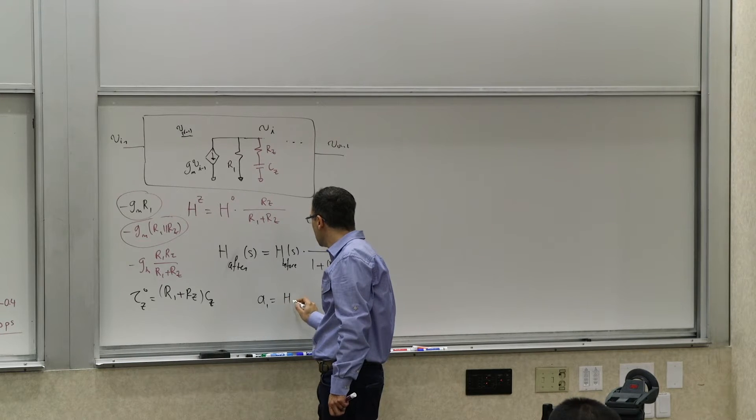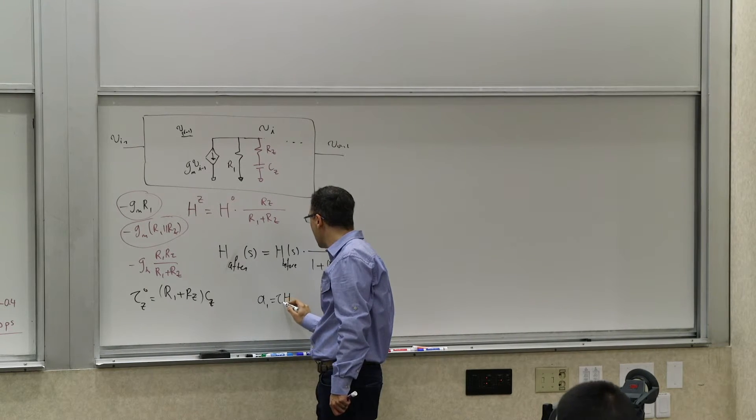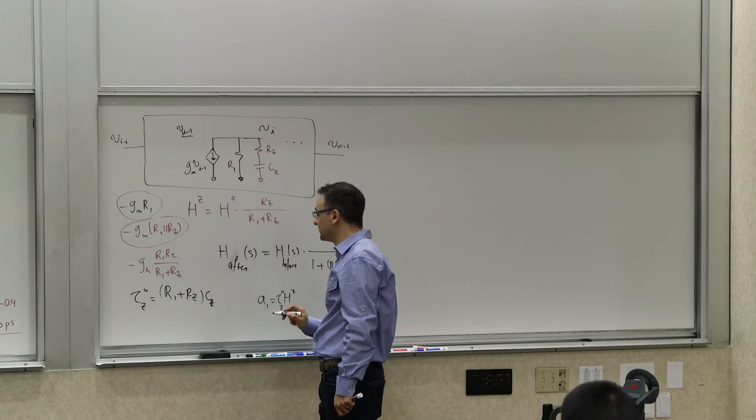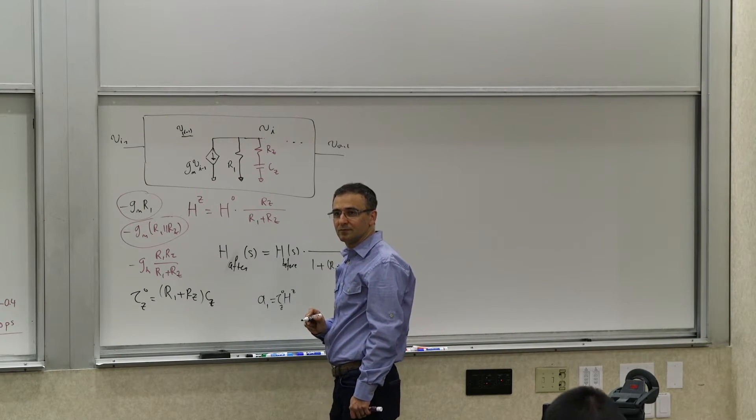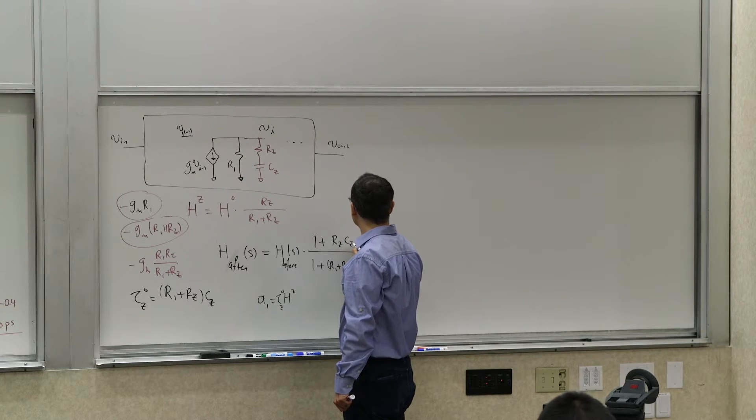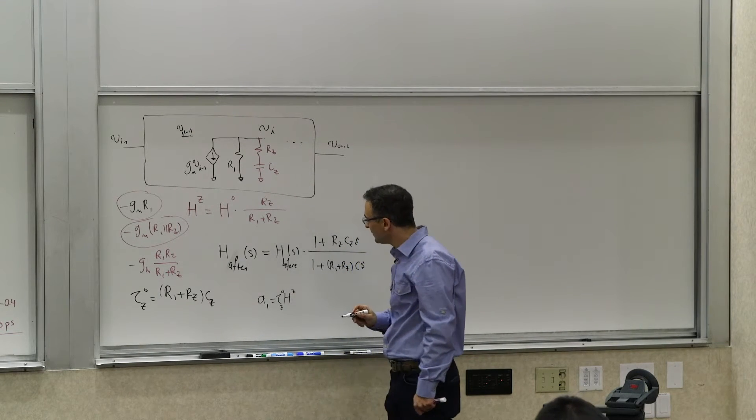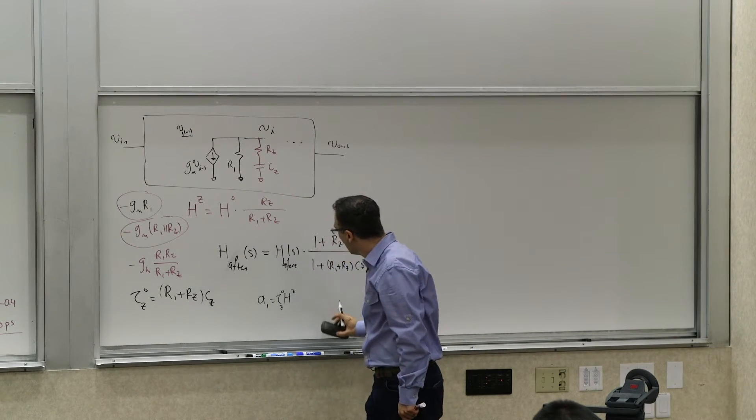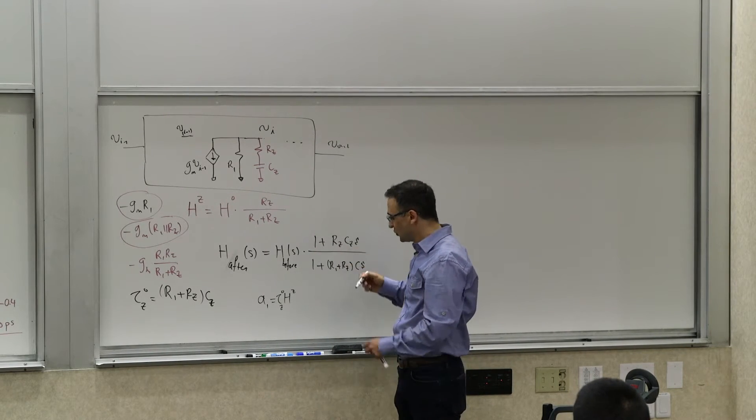Right? You remember A1 is going to be Hz or tau_z0 Hz due to this one. So that would leave basically Rz*Cz*S.